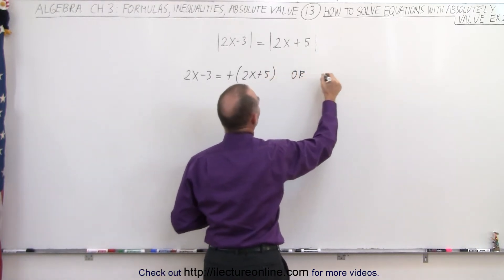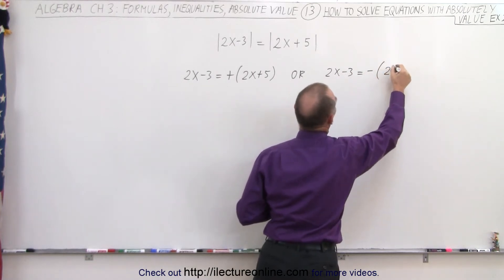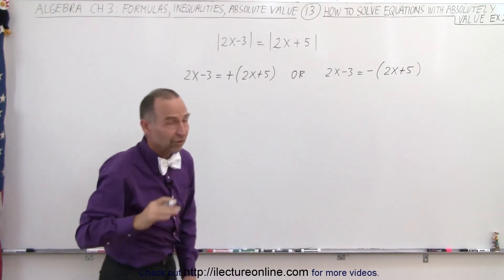Or we can say that 2x minus 3 is equal to the negative of 2x plus 5. And then we'll solve those two equations and see what we end up with.